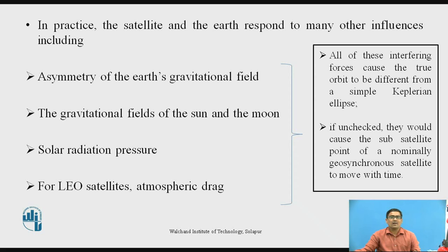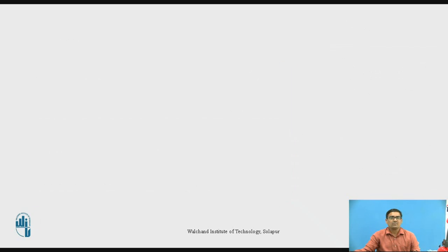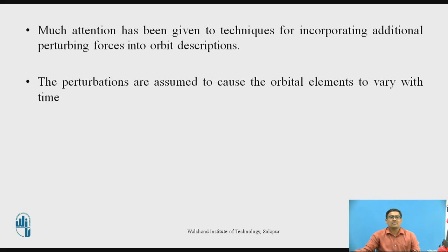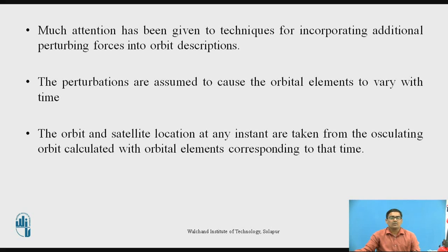If unchecked, these forces would cause the sub-satellite point of a nominally geosynchronous satellite to move over time. Much attention has been given to techniques for incorporating additional perturbation forces into the orbit descriptions. The perturbations are assumed to cause the orbital elements to vary with time, and the satellite location at any instant is taken from the oscillating orbit calculated with orbital elements corresponding to that time.